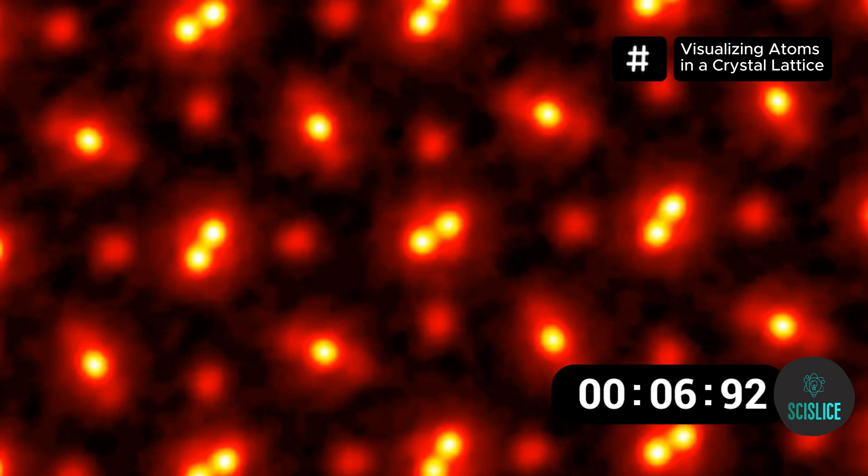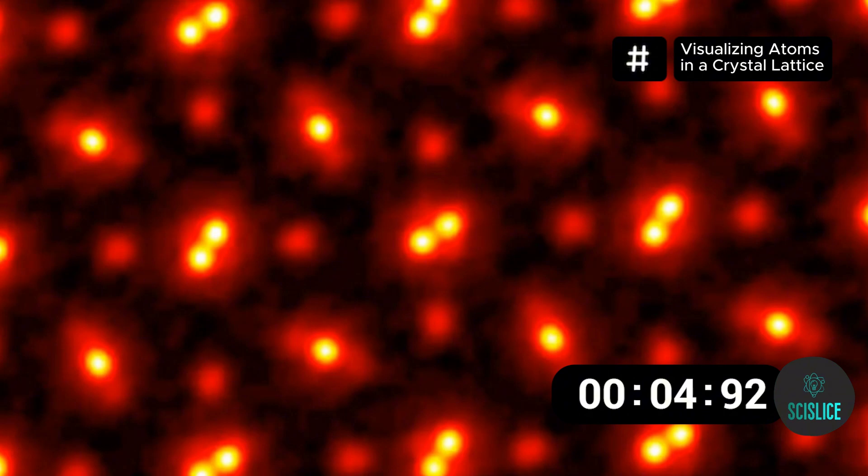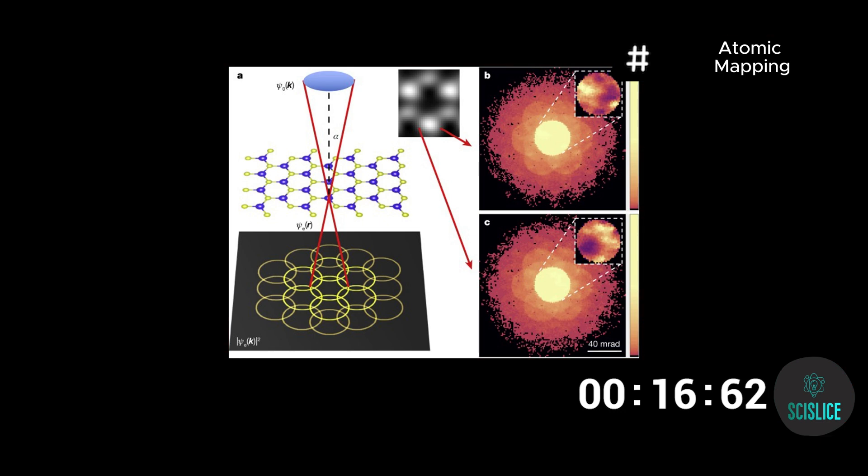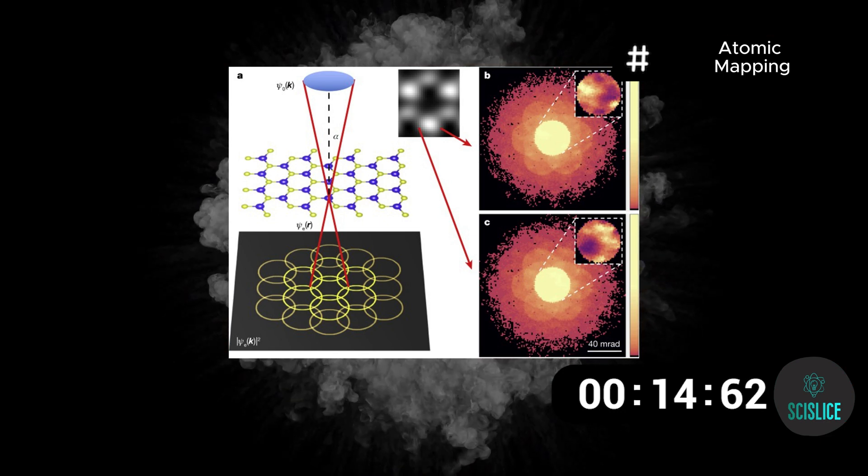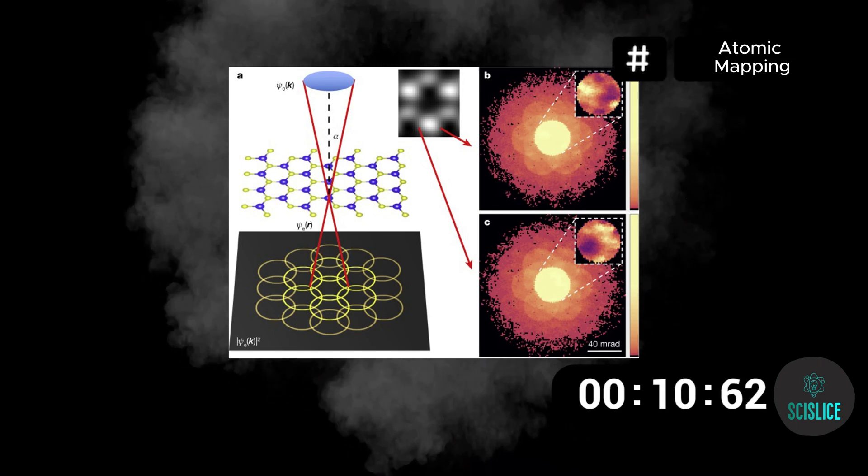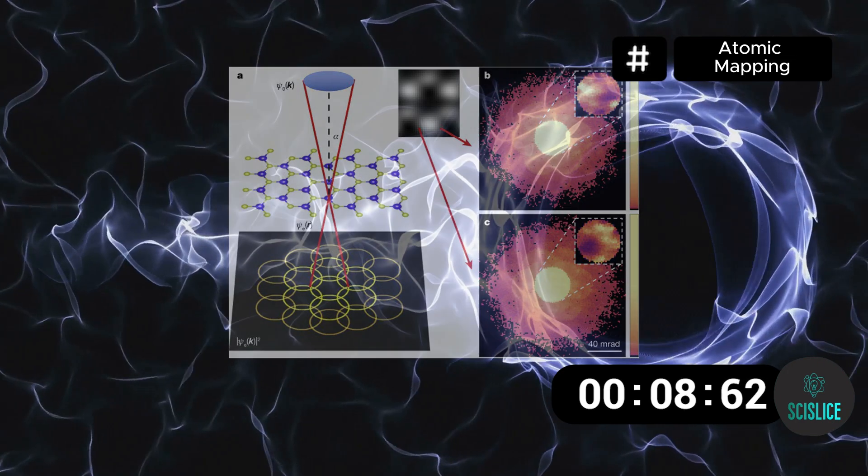Praseodymium atoms appear in pairs, scandium atoms as single blobs, and faint red oxygen atoms forming the crystal structure. This technique, ptychography, uses the interference patterns of electrons to map out atomic structures with incredible precision.